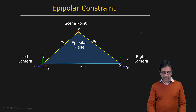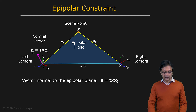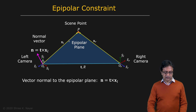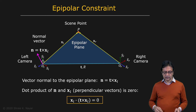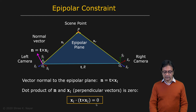There is a vector normal to this epipolar plane — we'll call that N. We can calculate that normal vector as the cross product of the translation vector T and the vector XL, which corresponds to point P in the left coordinate frame. So N = T × XL. We know that the normal vector should be perpendicular to XL itself, meaning the dot product of N and XL should equal zero. That is our epipolar constraint: (T × XL) · XL = 0.